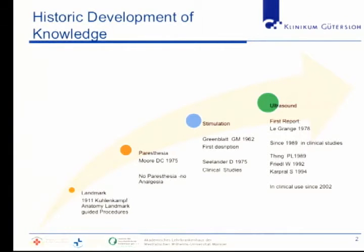Paresthesia was described by Moore in 1975, and stimulation had its first clinical description from Greenblood in 1962, but it came into clinical practice from Dark Cylinder in 1975. Ultrasound had its first reports in 1978 by Lagrange, a French group. Since 1989, we find clinical studies from three groups: SING in 1989, Friedl in 1992, and Stefan Kappel in 1994, forming a database where ultrasound was clinically used for applying regional anesthesia.